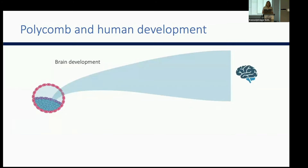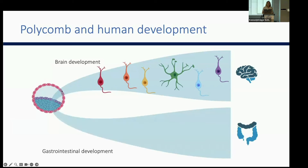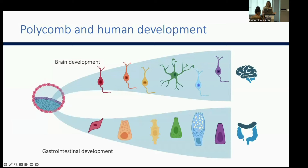So how might polycomb or additional sex combs-like genes be disrupting human development? Normally in development, each developing human starts from a mass of really similar cells — they all look the same. In the course of brain development, those similar cells have to change in many different ways to generate all the different kinds of cells required to develop a brain. This happens in all organ systems, including the GI tract, where you have to generate all the different cell types required for that organ.